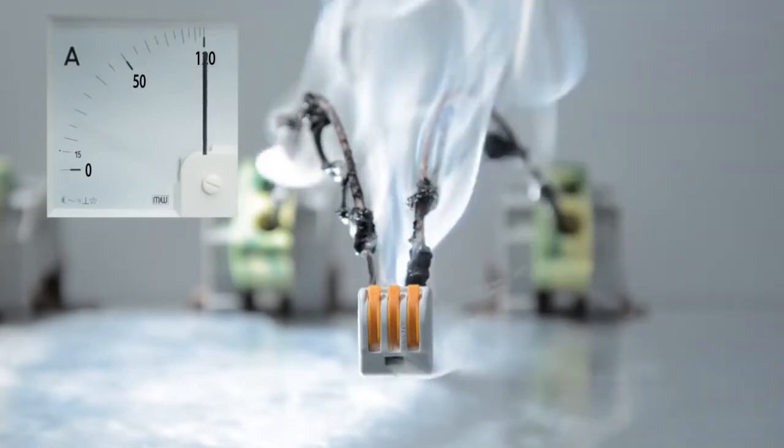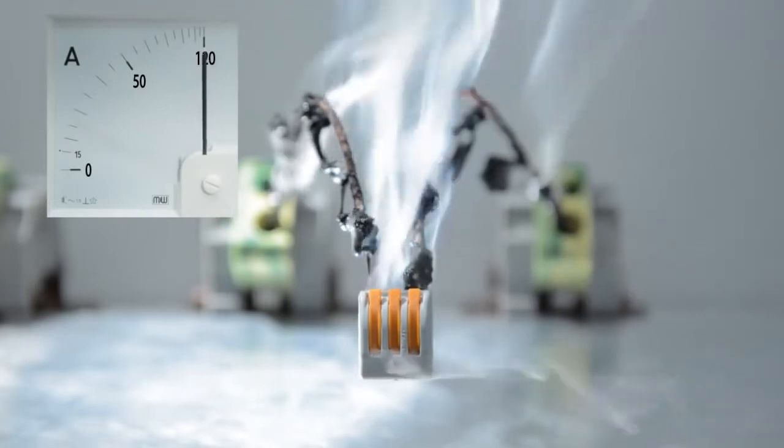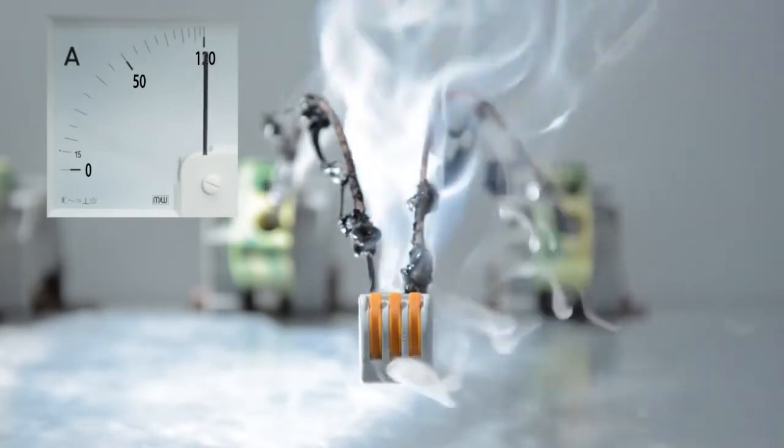This is not the case for WAGO's 222 series splicing connector. Both the connector's electrical functionality and housing insulation remain intact.